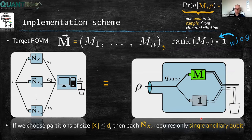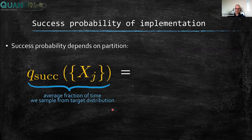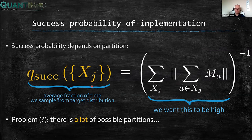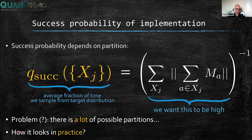So we can implement any measurement using classical operations and a single ancillary qubit. But what about the success probability? It turns out that for our protocol, the success probability can be expressed in terms of norms of measurement operators divided into the subsets X_j. While choosing the partition, we want this quantity to be high. The problem is that there are a lot of possible partitions, so how do we find a good one? To investigate this, we did some numerical experiments.